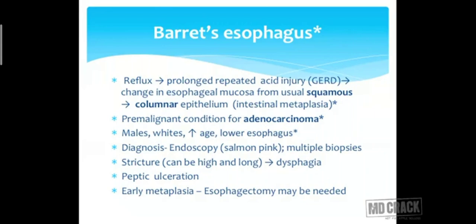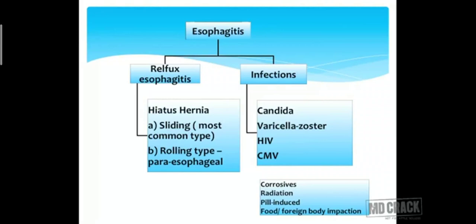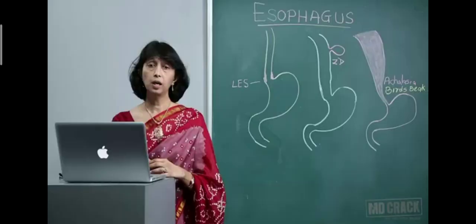Coming to esophagitis: reflux esophagitis can result from hiatus hernia — sliding, direct, or rolling para-esophageal type. Infections causing esophagitis include Candida, varicella zoster, HIV, and cytomegalovirus. Corrosive ingestion, either accidental or for suicidal intent, can also cause esophagitis. Radiation therapy for carcinoma of the larynx, pharynx, or lung is another cause. Pill-induced esophagitis — NSAIDs especially aspirin and steroids — and food or foreign body impaction that goes unnoticed can later present with severe esophagitis.